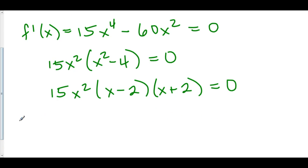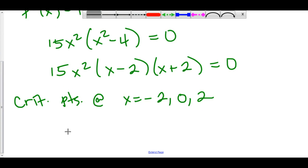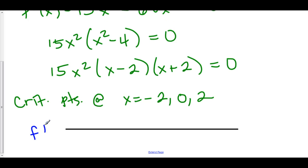So we have critical points at x equals negative two, x equals zero, and x equals two. Let's now do our first derivative line analysis to determine where we might have maxes and mins, and also where our function is increasing and decreasing. Here's negative two, here is zero, and here's positive two. Let's look to the left of negative two and use the factored form. Let's try negative three: positive outside, negative in here, negative in here — this will be positive.